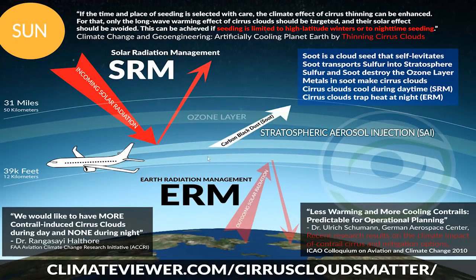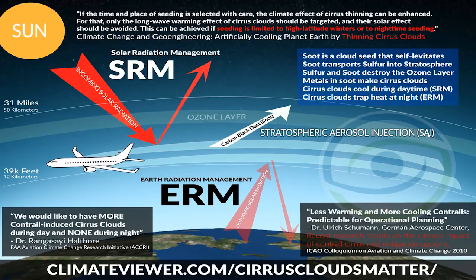Most people who talk about chemtrails also refer to it as geoengineering, and it is geoengineering. Geoengineering is any scientific process that seeks to alter Earth's temperature or climate over the long term. Typically, the ones we're concerned about are what's known as stratospheric aerosol injection, or SAI — spraying particulates, dust, metal, even diamond dust into the sky to block sunlight: SRM.